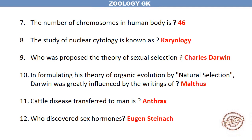The number of chromosomes in the human body is 46. The study of nuclear cytology is known as Karyology.